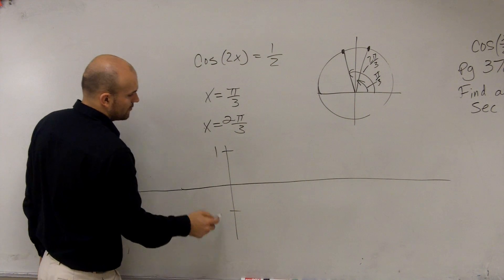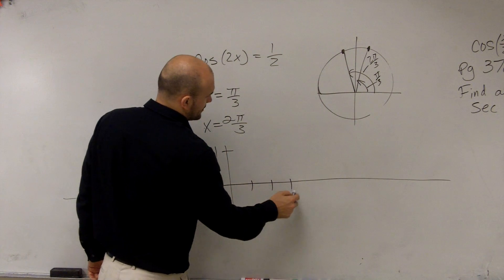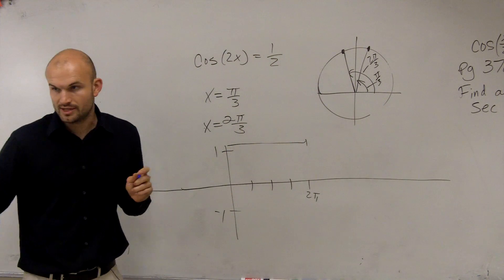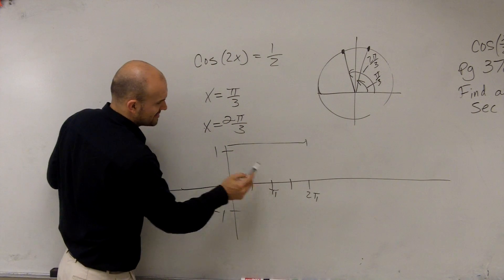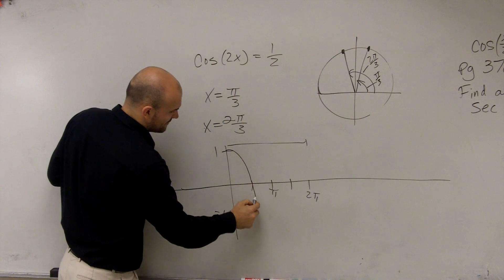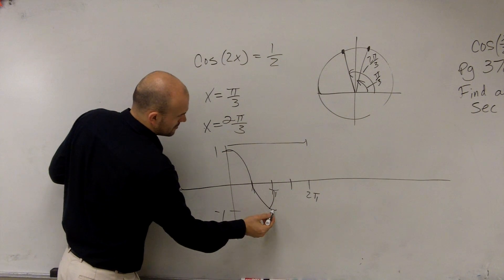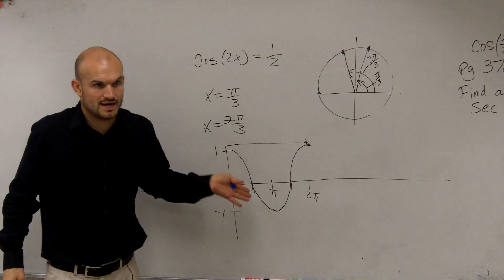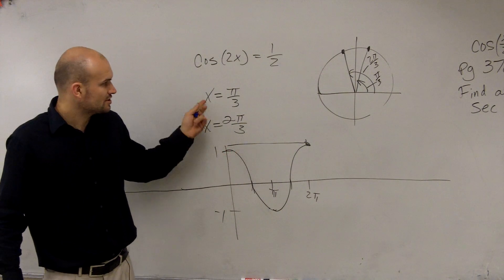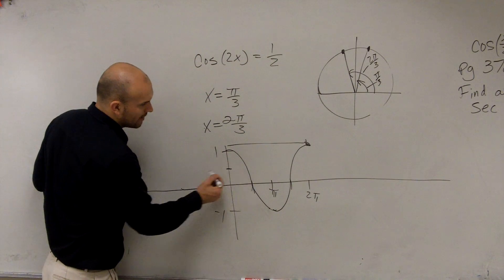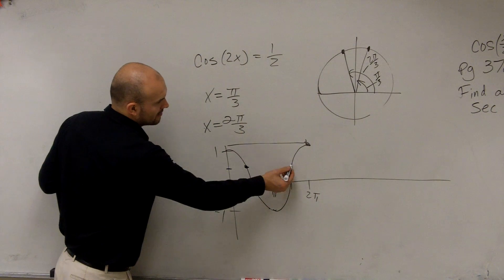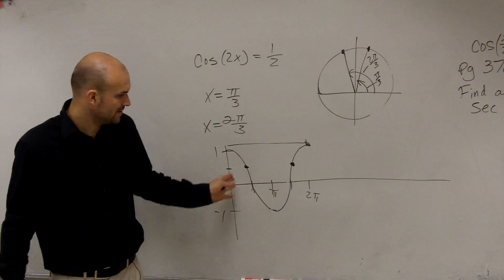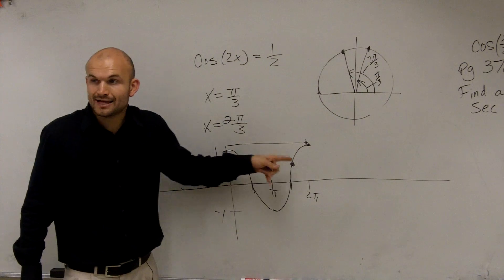Let's go and graph the cosine graph. We have 1 and negative 1, and here is 2π. Between 0 and 2π, that's the distance of the unit circle — what we call our initial period. So if our graph looks something like this, that's what the initial period of the cosine graph looks like. And what I'm asking is: for what angles does cosine equal 1/2? Well, if 1 is here, then 1/2 is right there. So there are two angles — at π/3 and at 2π/3.